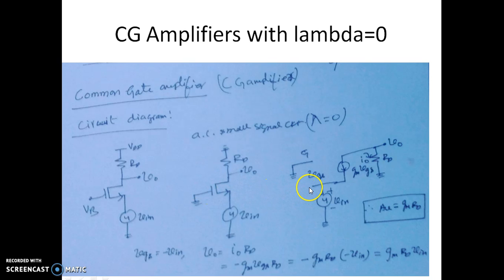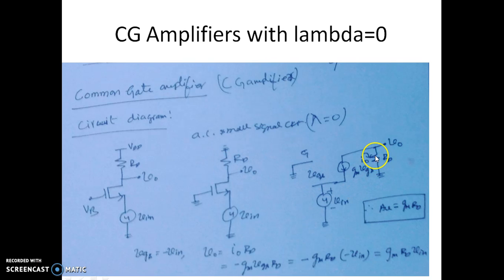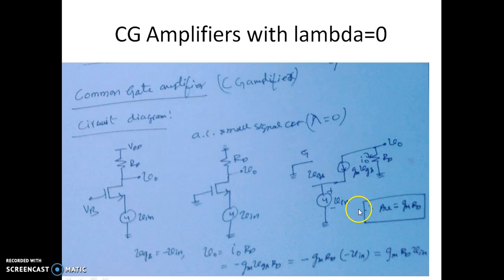This is the small signal equivalent circuit, replacing the MOSFET by its small signal model in the saturation region. We have VGS, a current source Gm·VGS, and the resistor RD connected from the drain to ground. The V0 expression is given by I0 into RD — that is the drop across RD. I0 is equal to minus Gm·VGS because it is in the opposite direction to the assumed I0.